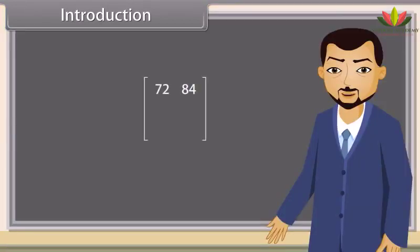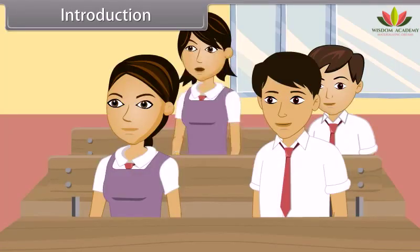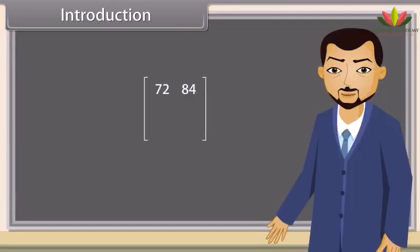72 in science and 84 in maths. Okay. Shraddha, now you tell me, how much did you score in science and maths? Teacher, I scored 86 in science and 85 in maths. Okay, 86 in science and 85 in maths.